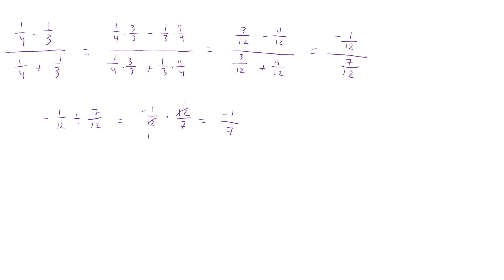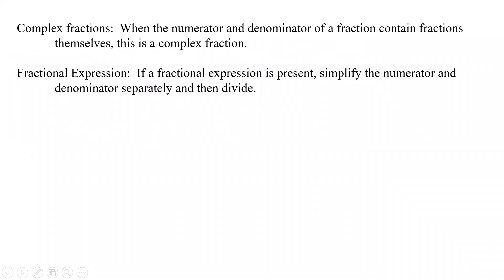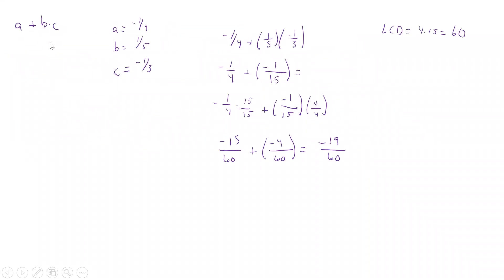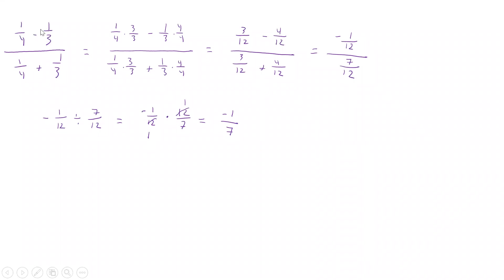That's one way to solve complex fractions. If the numerator or denominator had other operations like multiplication, you'd simplify those first, following order of operations. At the end, you still multiply by the reciprocal — keep your first fraction, change to multiply, take the reciprocal, anything that cancels cancels, and you get your final result.